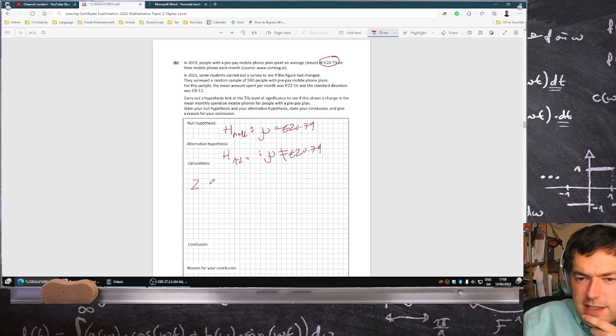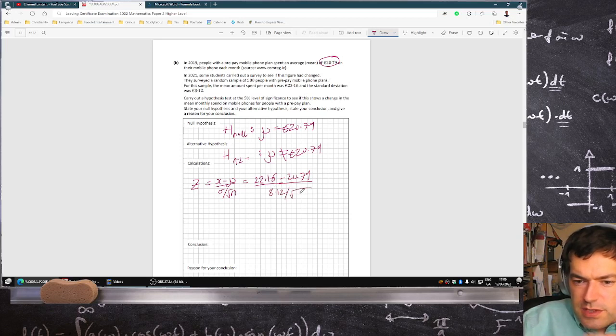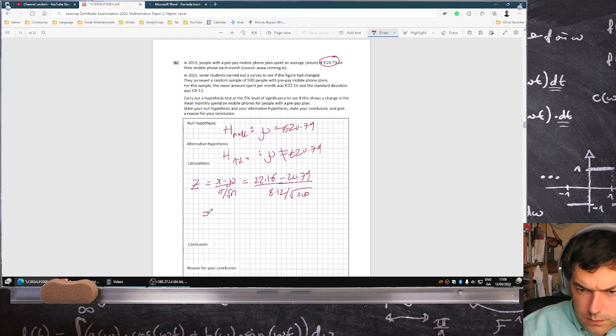Under the null hypothesis, we calculate the test statistic as x minus mu over sigma over root n, which will be 22.16 minus 20.79 over 8.12 over root 500. That equals 3.77.